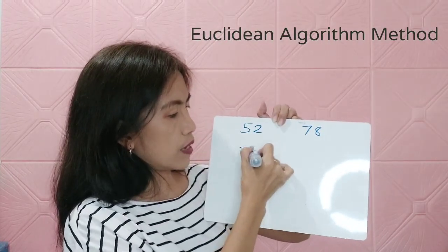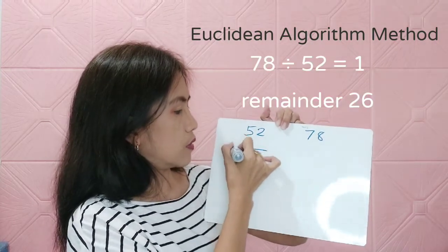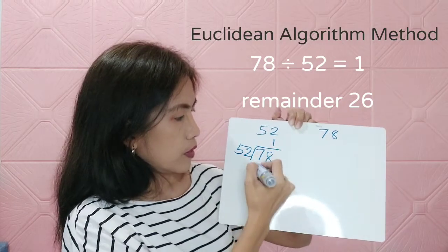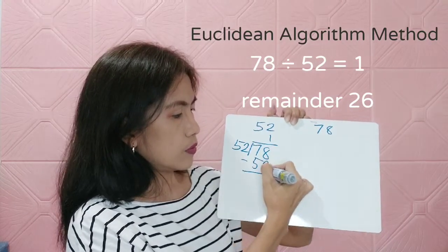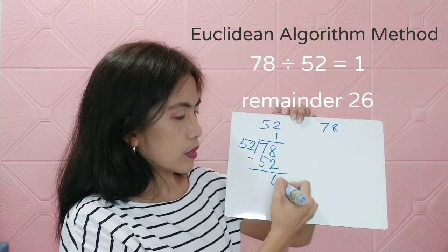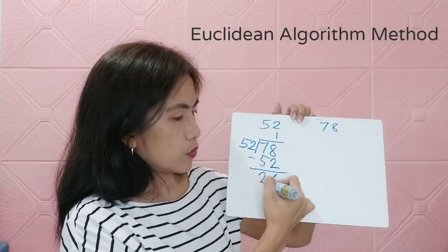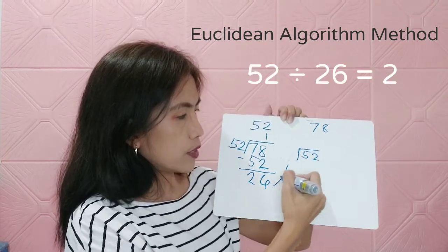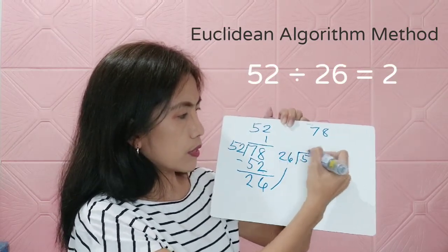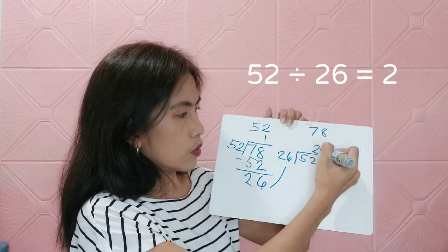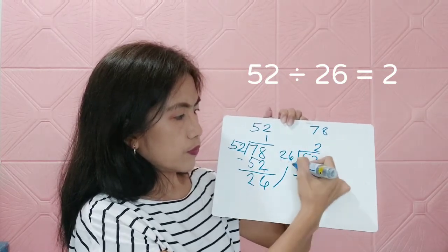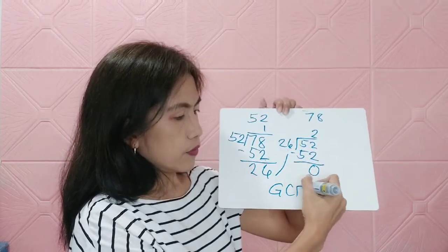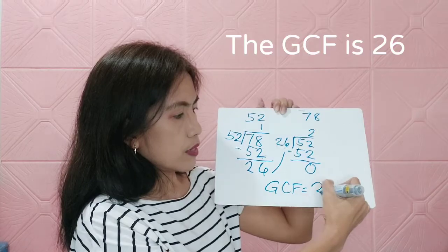Using the Euclidean algorithm for 52 and 78: divide 78 by 52, which gives 1 remainder 26. Then divide 52 by 26, which gives 2 remainder 0. The divisor that gives us 0 is 26, so the GCF of 52 and 78 is 26.